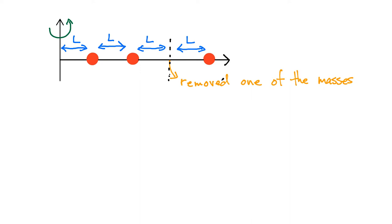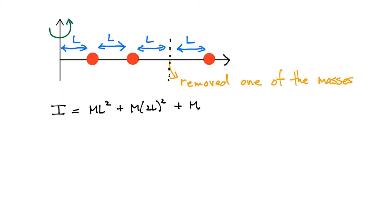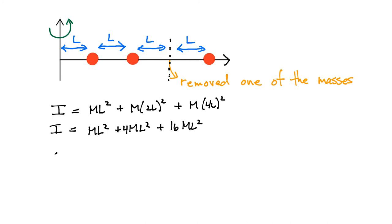Now what happens if we remove one of the masses? I've removed the third mass. Using the same formula with only three masses at distances l, 2l, and 4l, the moment of inertia is ml² + 4ml² + 16ml² = 21ml².